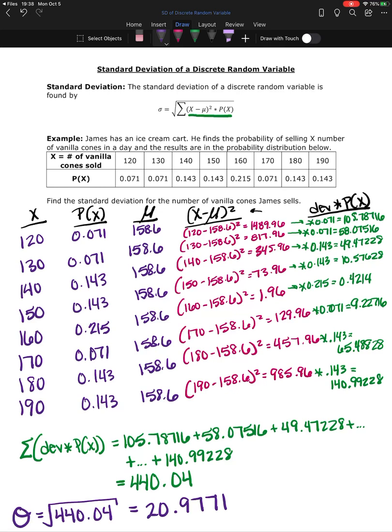So James is selling an average of 158.6 vanilla cones a day but he has a standard deviation of almost 21 cones. So again he needs to kind of think about how many cones will I sell in a given day using the mean and the standard deviation. And if this were roughly bell-shaped he could use the empirical rule and kind of use that as a guide. I can't be certain that this is bell-shaped however, but that is how you are going to go about finding the standard deviation of a discrete random variable.